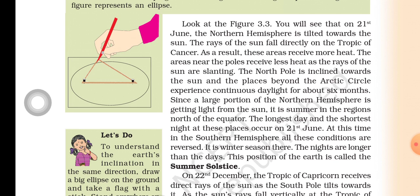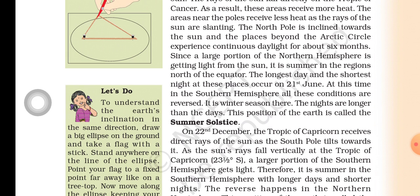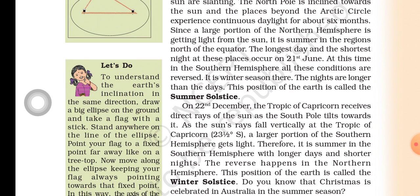As the rays of the sun are slanting near the poles, the north pole is inclined towards the sun and places beyond the Arctic Circle experience continuous daylight for about six months. Since a large portion of the northern hemisphere is getting light from the sun, it is summer in the regions north of the equator. The longest day and the shortest night at these places occur on 21st June.